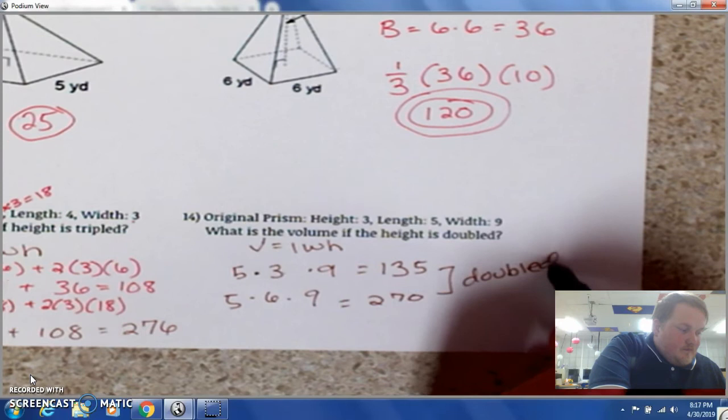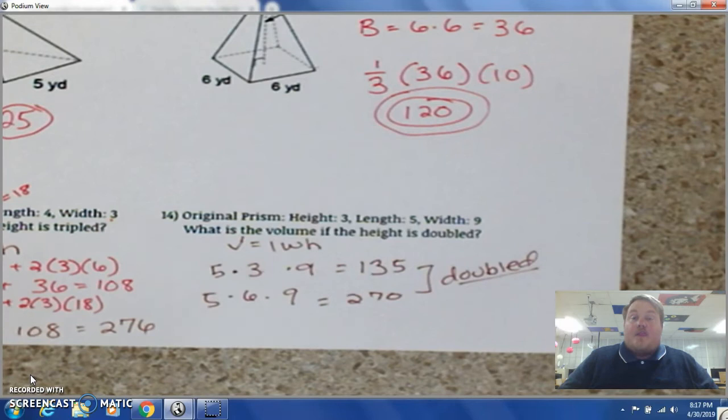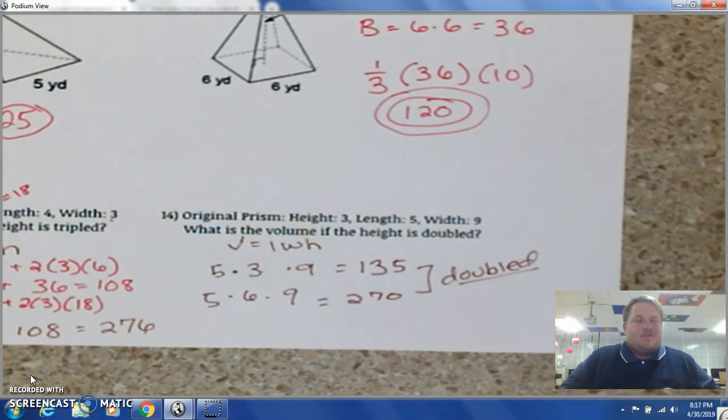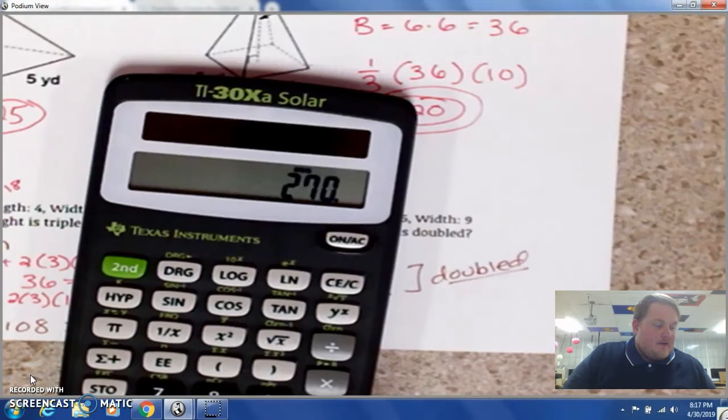If you tripled the height, or tripled the length, or tripled the width, the whole volume would triple as well. If you increase the height 16 times, the volume would also increase 16 times. You know it's doubled because 270 divided by 2 is 135. It's literally doubled as well.